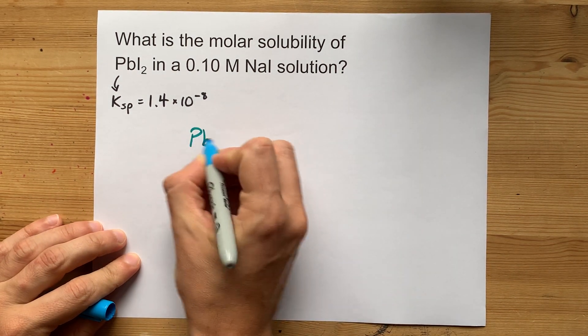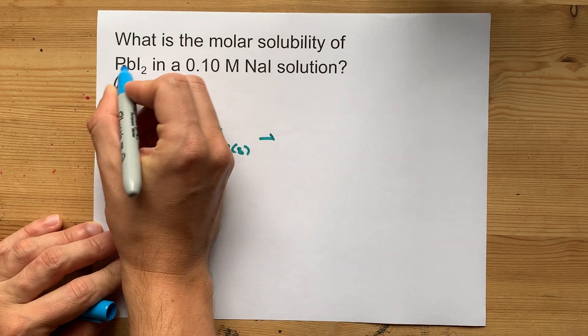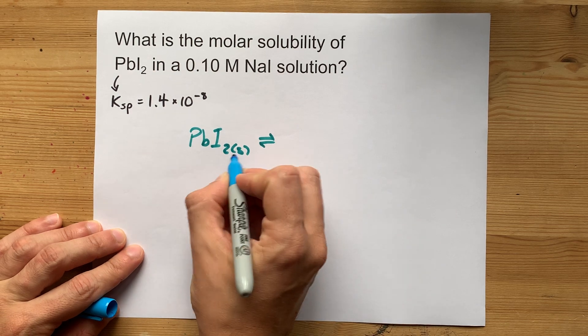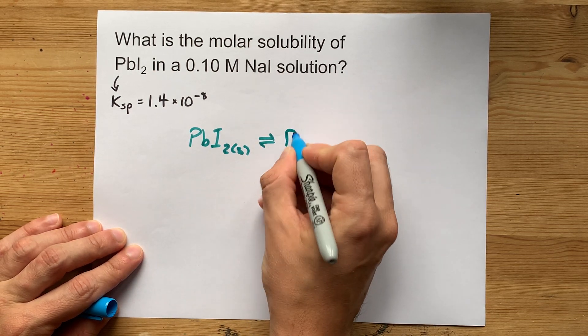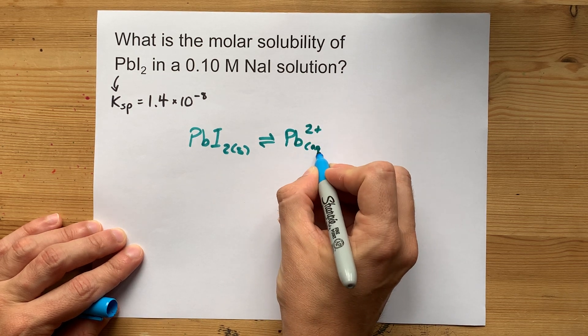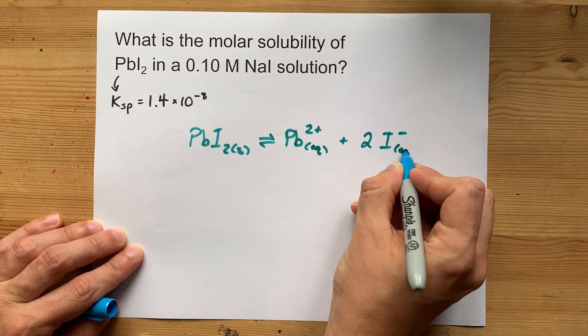Now, to figure out solubility, you should first create the equation of that solid which is going to dissolve. When a solid dissolves in water, it becomes aqueous, but it breaks up into its ions. The ions here are Pb²⁺, and you're going to get two iodide ions out of it as well.